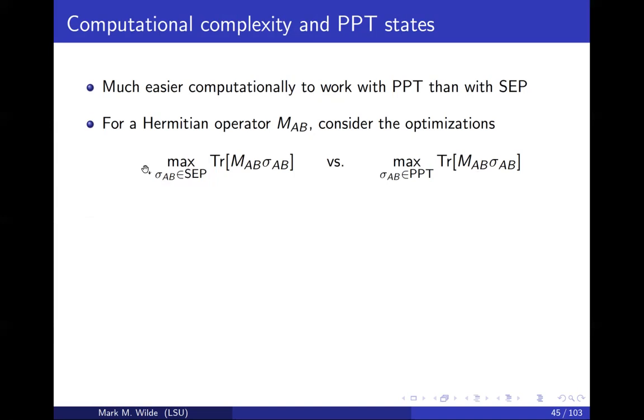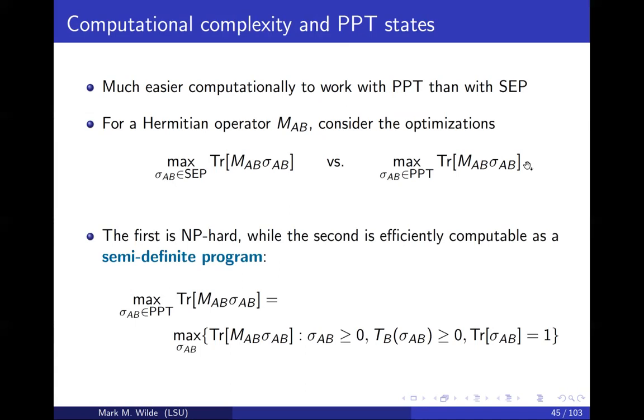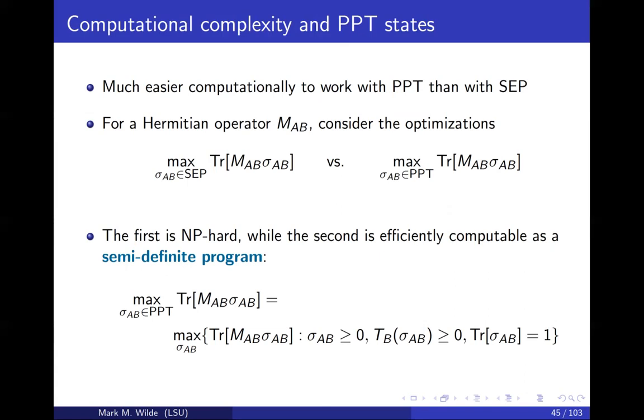For a Hermitian operator, we're trying to maximize this quantity, the expected value of this operator with respect to all separable states versus the expected value with respect to PPT states. The left-hand side is going to be hard because you're optimizing over the set of separable states, and we remarked how that's NP-hard. However, the right-hand side is what's called a semi-definite program, so you can solve that efficiently in the dimension of the local systems. This is the semi-definite program, something you can plug into MATLAB. There's a toolbox called CVX and you could program MATLAB and it could solve this efficiently.